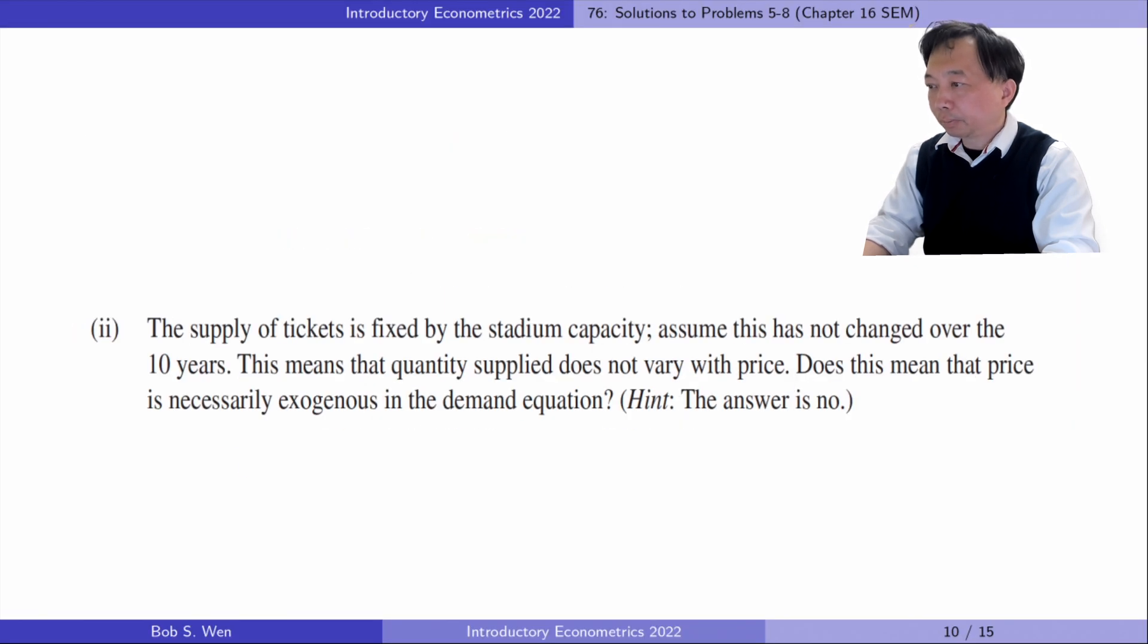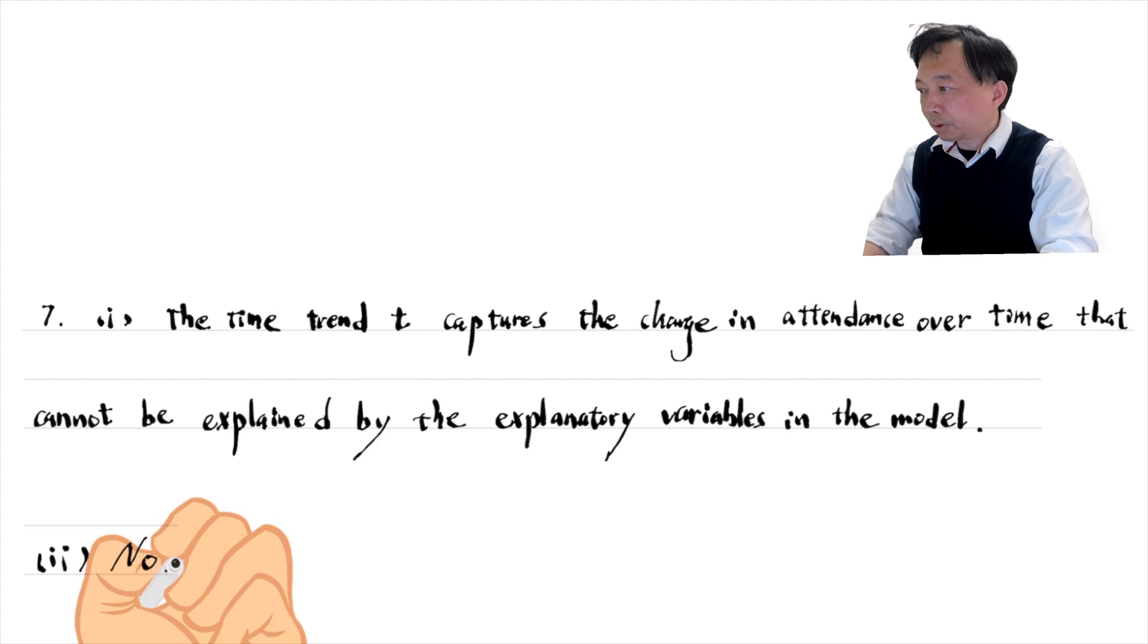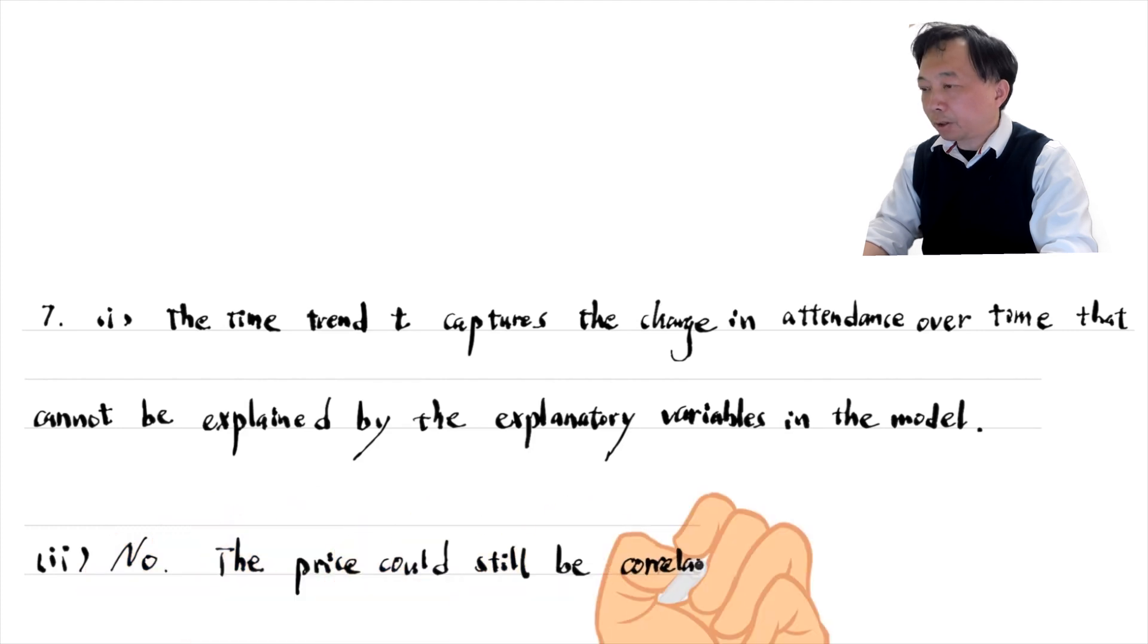In part two, the supply of tickets is fixed by the stadium capacity. Assume this has not changed over the 10 years. This means that the quantity supplied does not vary with the price. Does this mean that price is necessarily exogenous in the demand equation? No, the price could still be correlated with the error term mu.